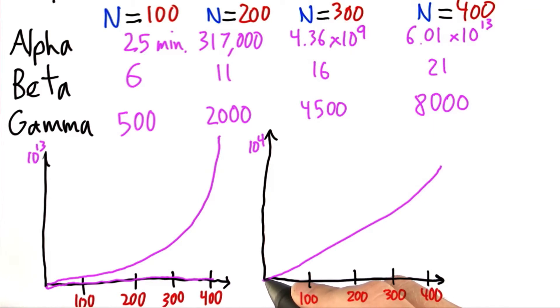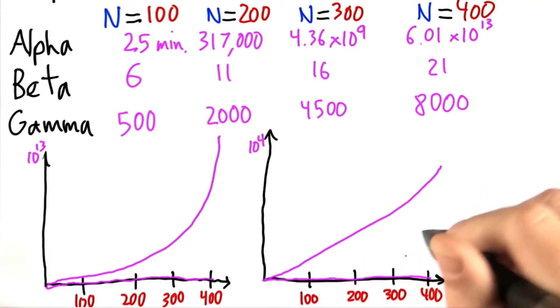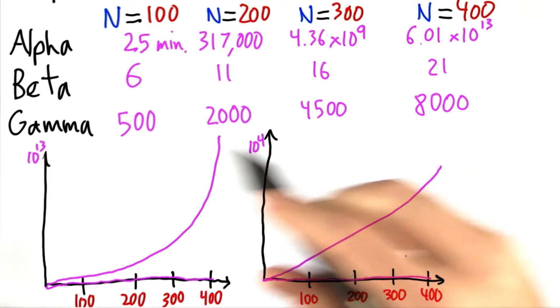If we try to draw beta, we're still right about here. So it still grows much, much slower than gamma does.